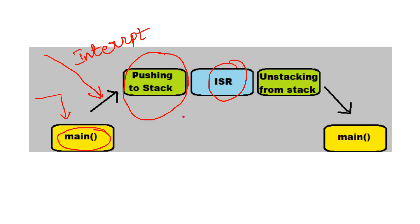The stack value is nothing but the return addresses and some local variables, for resuming the main program. After storing the values in the stack, the processor starts executing the ISR. After completing the ISR, unstacking occurs — unstacking means reading the content from the stack and storing it back to the registers for executing the main program. This is a simple interrupt handling mechanism when there is only one interrupt.